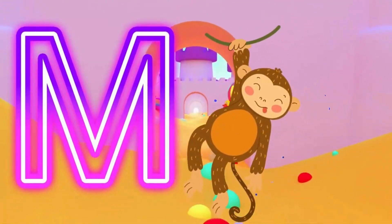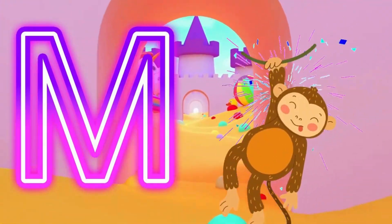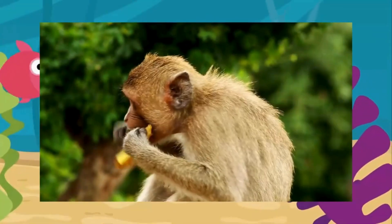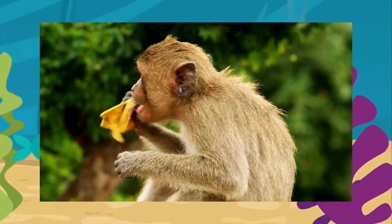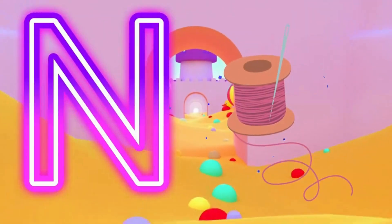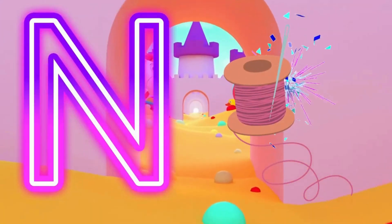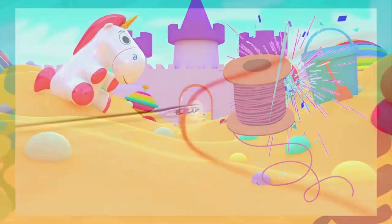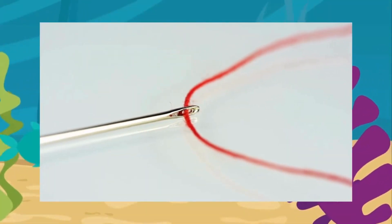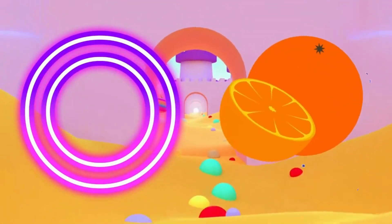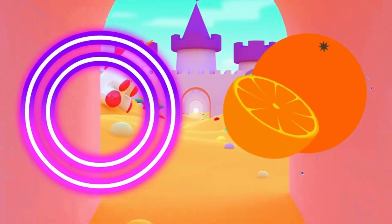M is for monkey. M, monkey. M, monkey. M, monkey. N is for horse.